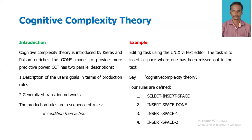The next model is CCT — Cognitive Complexity Theory. Cognitive Complexity Theory, introduced by Kieras and Polson, enriches the GOMS model to provide more predictive power. It has two parallel descriptions: first, a description of user goals in terms of production rules; second, generalized transition networks. The production rules are a sequence of if-condition-then-action rules. An example is an editing task using the Unix VI text editor — inserting a space where one has been missed in the text.